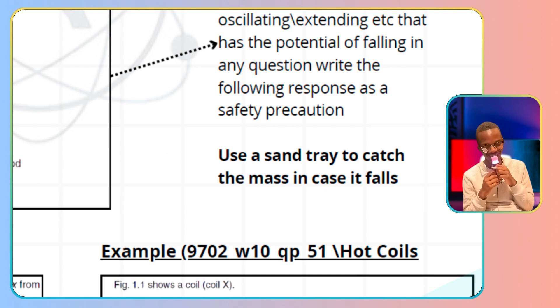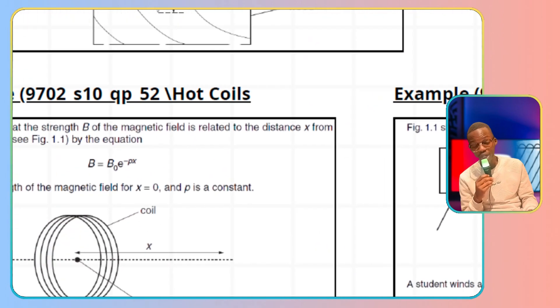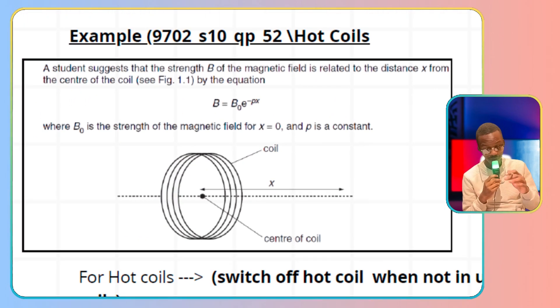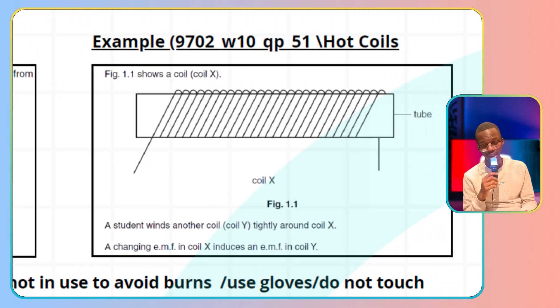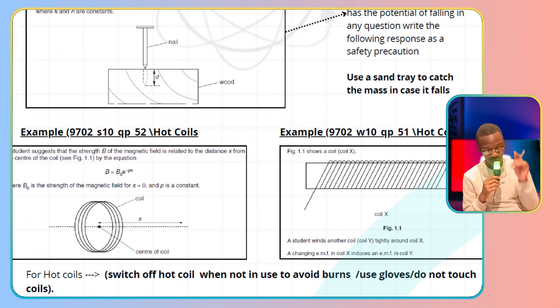The second example: May/June 2010 question paper 5-2, hot coils. Whenever you see experiments with hot coils—two examples, one from Winter 2010 question paper 5-1, another hot coil—